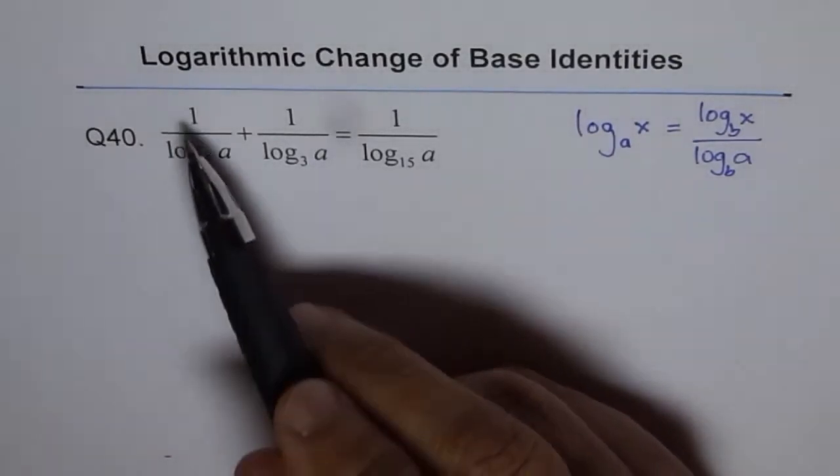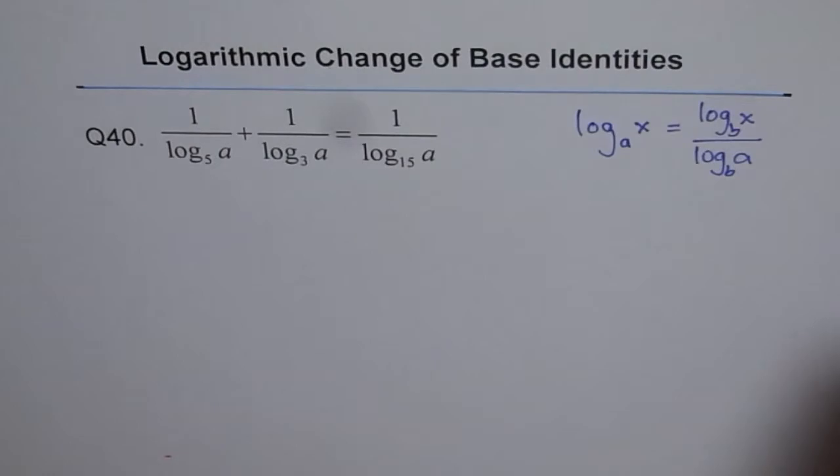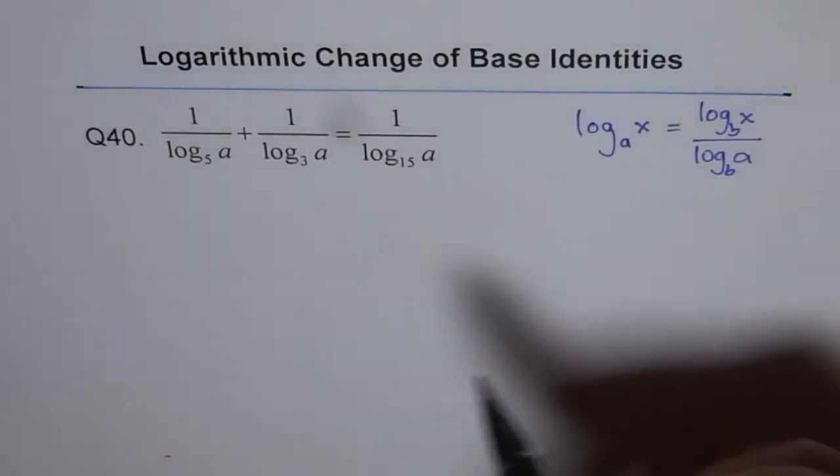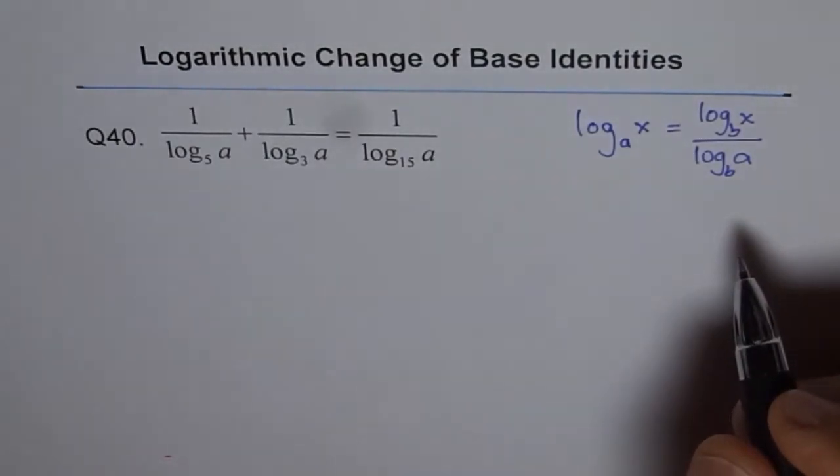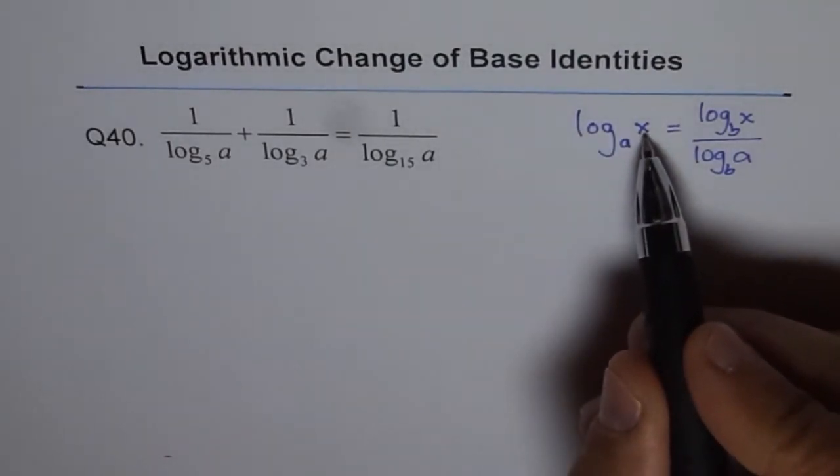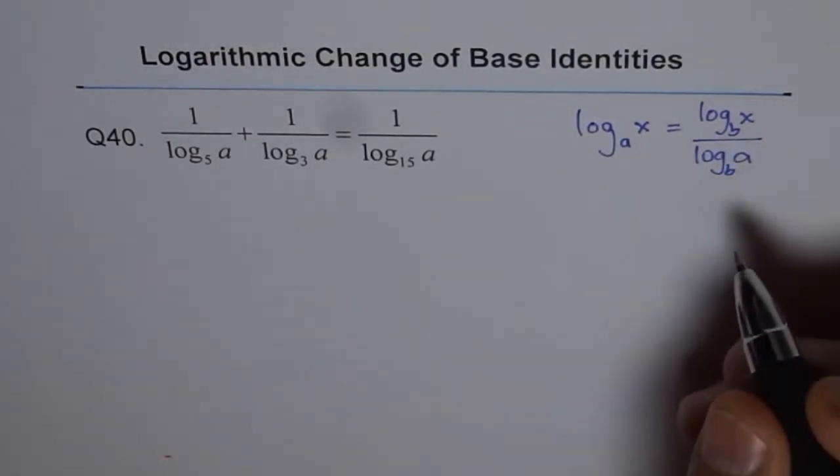Here you'll notice we have 1 over something. When it's 1 over something, we're changing the base to the function itself. Let me show you that part.